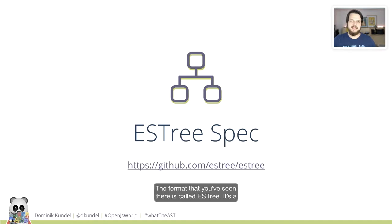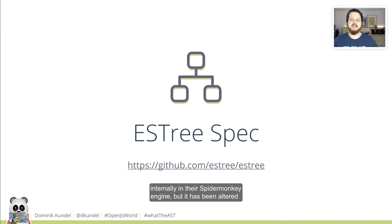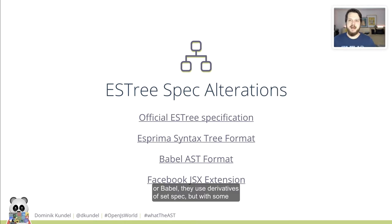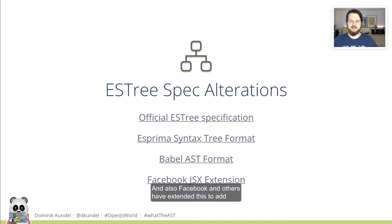The format you've seen there is called ESTree. It's a spec derived from the AST format that Mozilla uses internally in their SpiderMonkey engine, but it has been altered and extended from there. If you're using tools like Esprima or Babel, they use derivatives of that spec with some additions that help them with their functionality and goals. Facebook and others have extended this to add functionality like JSX and others into the language.